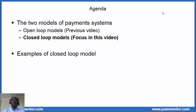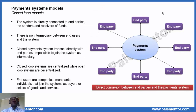So what are closed loop models? The picture on the right shows us what they are like. A closed loop system is directly connected to end parties, the senders and receivers of funds. So there is no intermediary between the end users and the system. End parties establish a direct connection to the payment system and it is not possible to join the payment system as an intermediary. This is one major difference between open and closed loop systems. In open loop systems, end parties access the payment system transactions through intermediaries. In closed loop systems, the end parties have a business relationship with the payment system and transact directly with it.